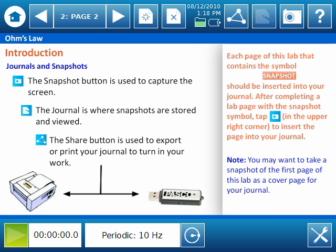The second page reminds your students how they will save their work and how that work can be turned in. Also, on the right-hand side of the second page are instructions asking students to use the snapshot button in the top right corner of the screen to insert pages into the journal wherever they see the snapshot icon. We'll see a demonstration of this in just a second. For now, let's go ahead and continue on.